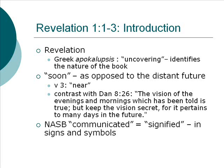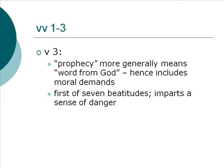John testified to the word of God and to the testimony of Jesus Christ, even to all that he saw. We have the first beatitude of the book in verse 3: 'Blessed is he who reads and those who hear the words of the prophecy and heed the things which are written in it, for the time is near.' There are seven beatitudes in the book of Revelation; this is the first. It highlights the fact that most people in ancient times could not read or write, but they could speak and listen. Normally when Paul wrote a letter to the church, it would be read aloud to the congregation.